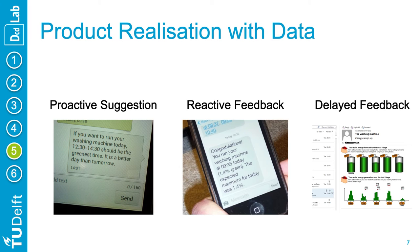The reactive feedback was also a text message, fired when the load was just completed and congratulating participants when they used a significant amount of local energy. Finally, the more traditional energy feedback via email was reported as not so useful — based in the past, without possibility to change anything. On top of that, our assumption is that emails and laundry routines are not really fitting together.